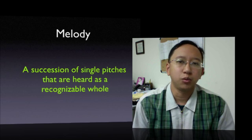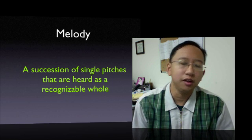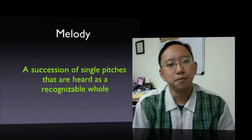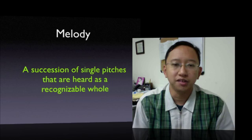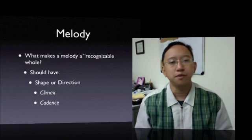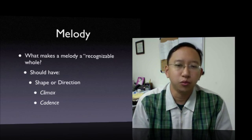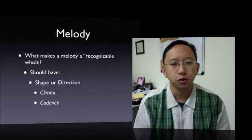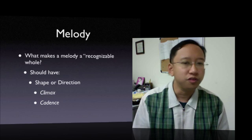The next aspect of music I wish to discuss is melody. In Chapter 5 we discuss melody, and the definition of melody is a succession of single pitches that can be heard as a recognizable whole. What makes a melody a recognizable whole? It needs to have a sense of shape or direction — it doesn't just stay in one spot but tends to move somewhere.